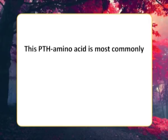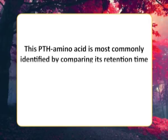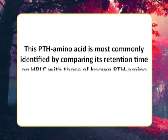The Edman degradation therefore releases the N-terminal amino acid residue but leaves intact the rest of the polypeptide chain. The thiazolinone amino acid is selectively extracted into an organic solvent and is converted to the more stable phenylthiohydantoin (PTH) derivative by treatment with aqueous acid. This PTH amino acid is most commonly identified by comparing its retention time on HPLC with those of known PTH amino acids.